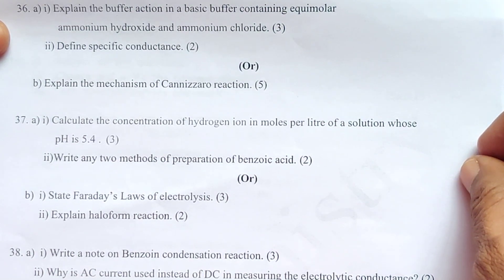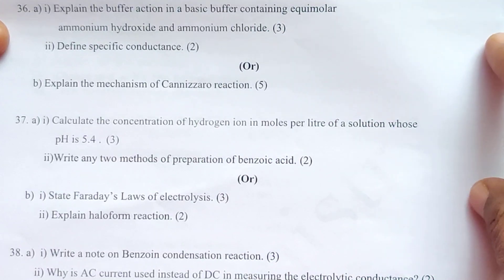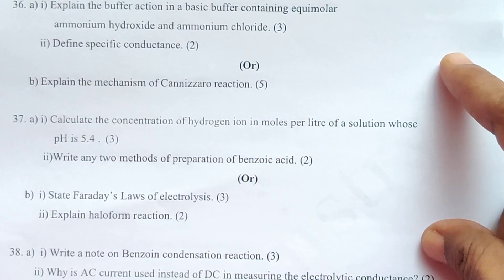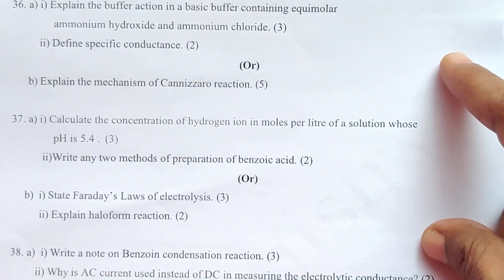37. a) i) Calculate the concentration of hydrogen ion in moles per litre of a solution whose pH is 5.4. ii) Write any two methods of preparation of benzoic acid. b) i) State Faraday's laws of electrolysis. ii) Explain haloform reaction.